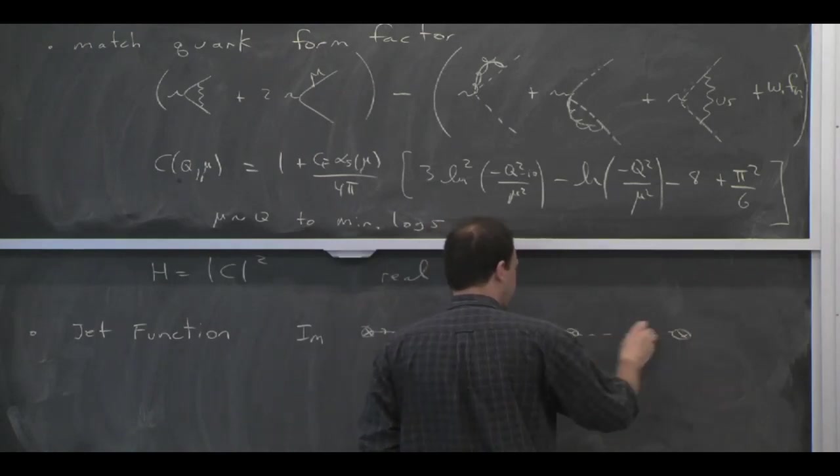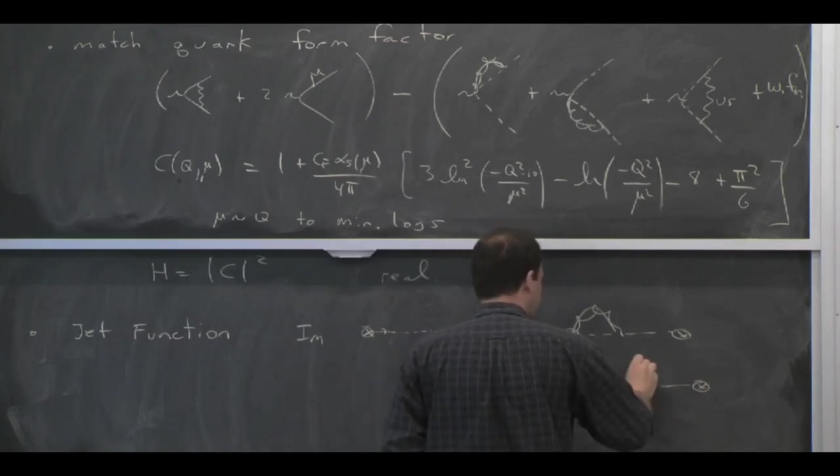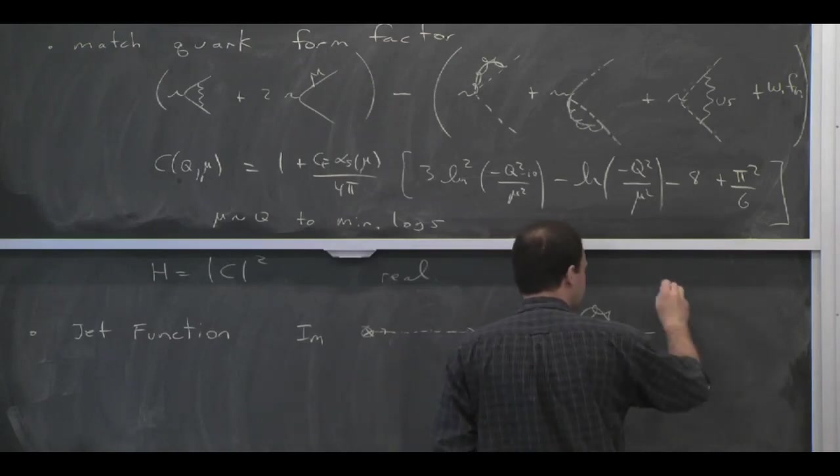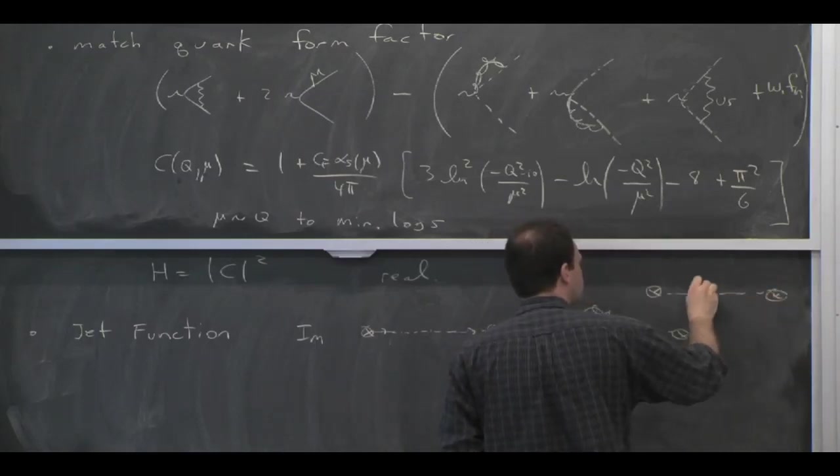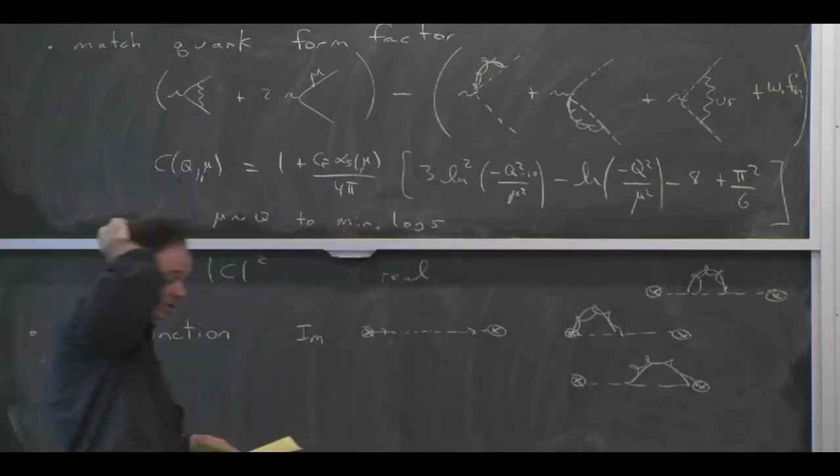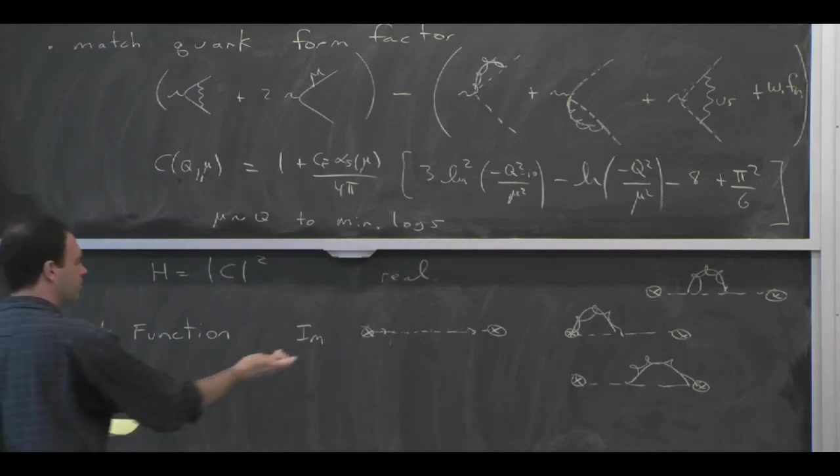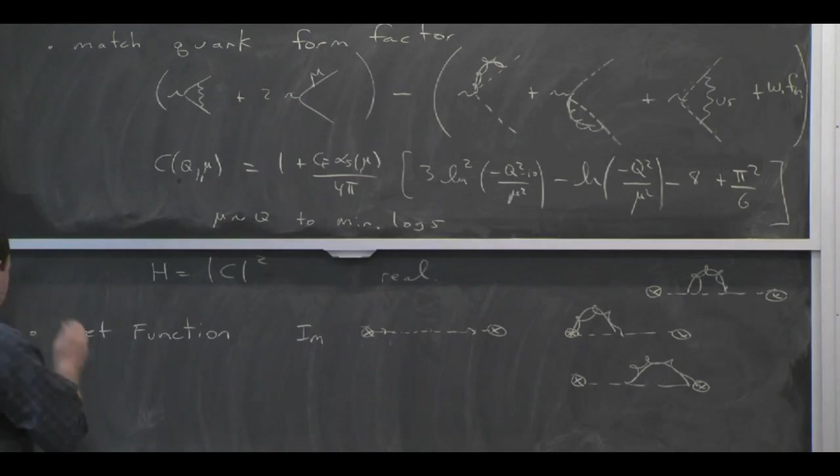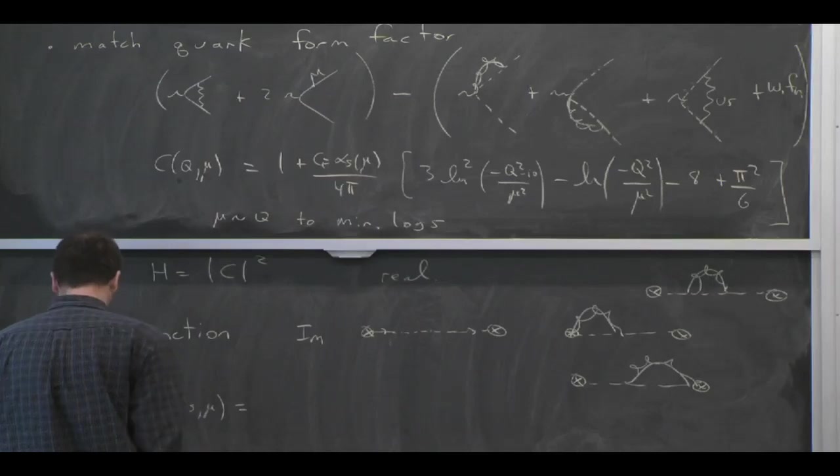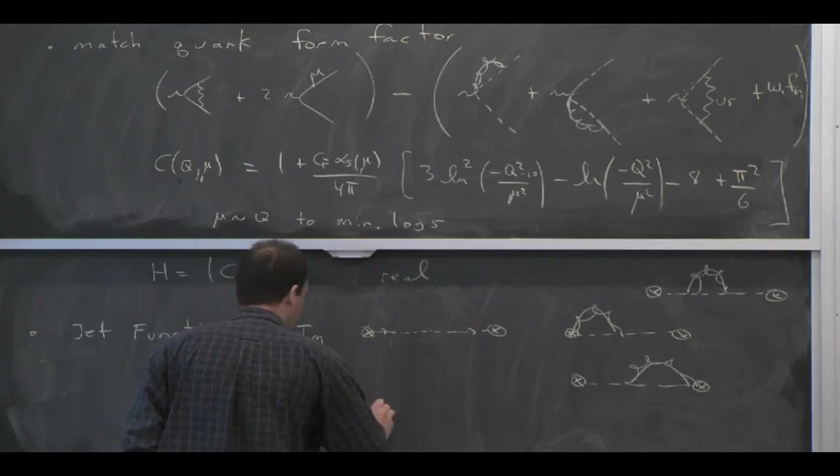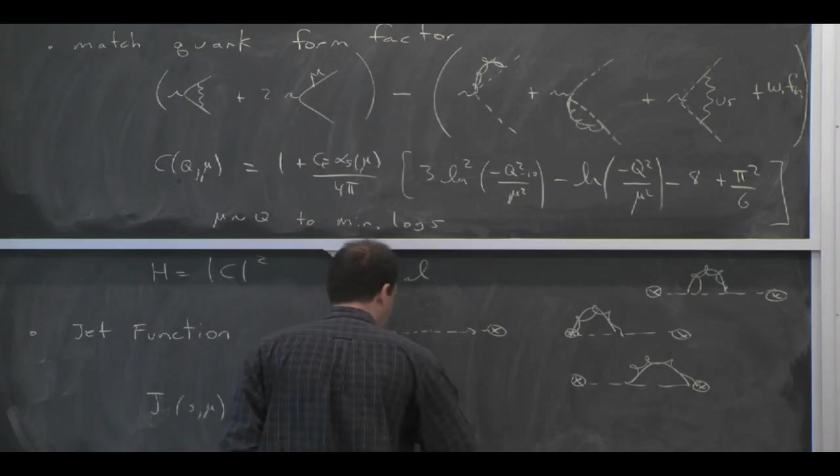So the jet function comes from some Feynman diagrams that look like this. And then there's one more. Looks like that. OK, so at one loop, we have those three Feynman diagrams. And then we have the tree-level guy. We take the imaginary part. We get the jet function. At lowest order, it gives a delta function, just a cut propagator. And then at one loop, you get a delta function and you also get plus functions.